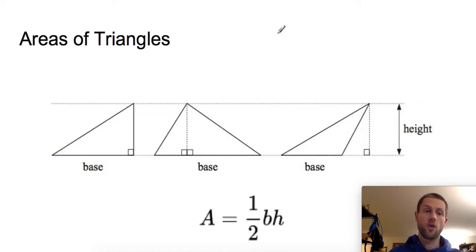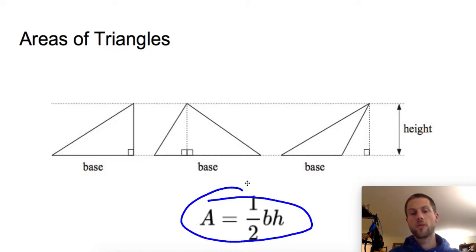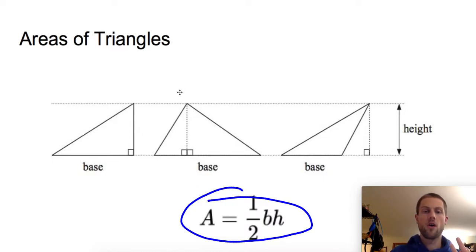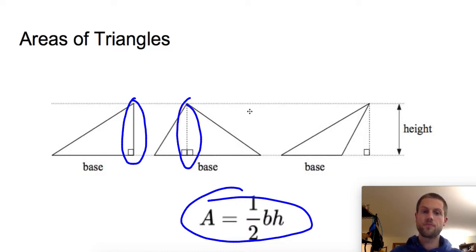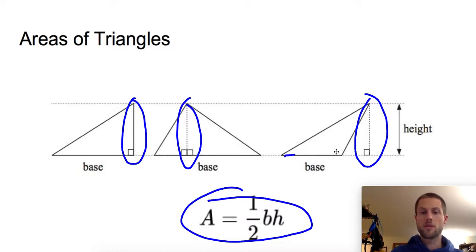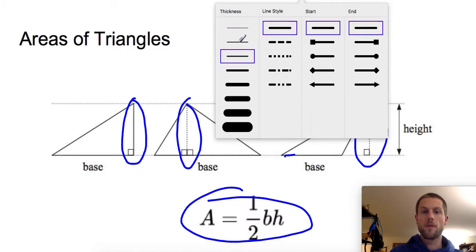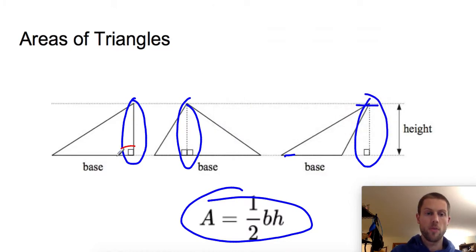Let's start with what you know about finding areas of triangles. I've got three triangles here — they all have the same height and different bases. We know the formula for the area of a triangle is one half the base times the height. There are three different cases for how the height can appear: in the first case, the height is one of the sides of the triangle; in the second, the height is within the triangle; and in the third, the height is actually outside of the triangle.